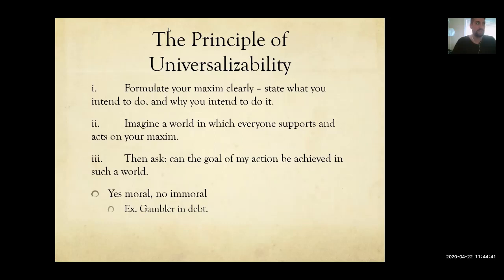You're giving yourself one set of rules and everybody else another set — saying everybody else has to be honest, pay their debts back, and keep their promises, except you. And Kant would say you would be irrational. Why do you give yourself that exception? There isn't a good reason to do that.